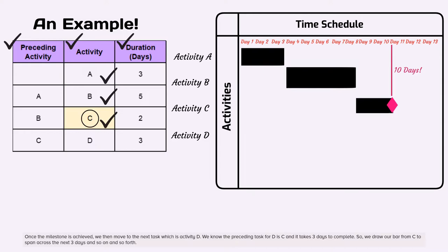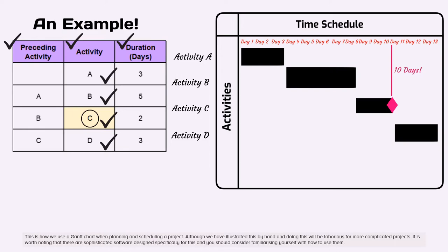Once the milestone is achieved, we then move to the next task which is activity D. We know the preceding task for D is C and it takes three days to complete. So, we draw our bar from C to span across the next three days and so on and so forth.